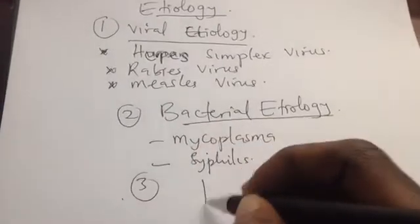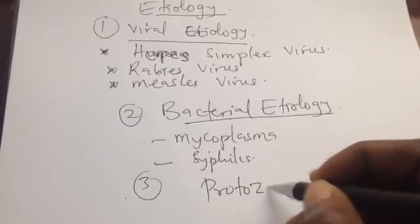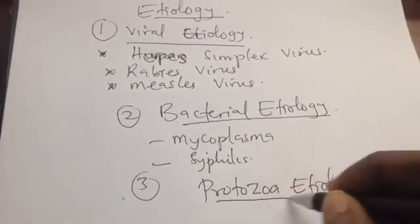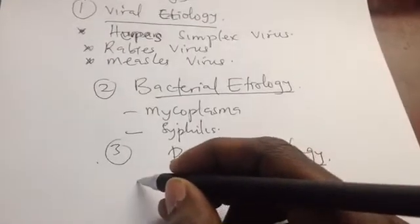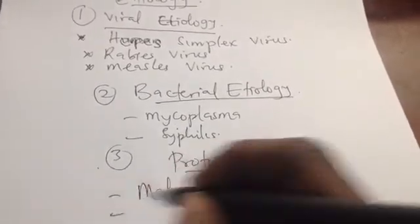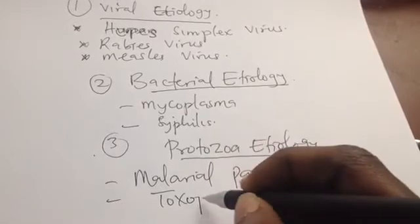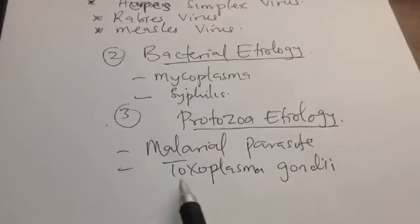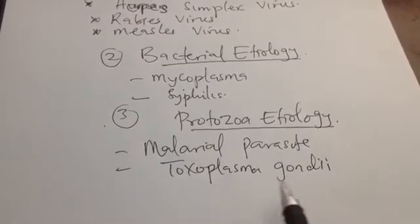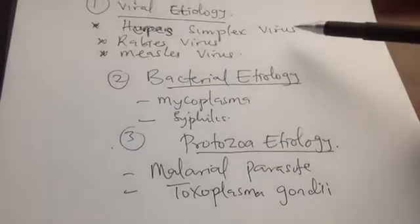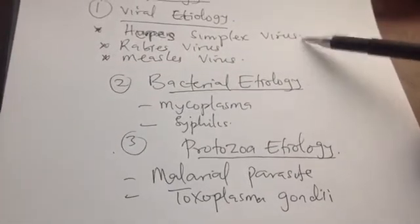Third, we have protozoal infections. The most important ones include the malarial parasite and Toxoplasma gondii — toxoplasmosis. When we view the brain tissue on CT, we see a kind of intracerebral calcification. This is especially seen in newborns. HSV is also a very important cause of encephalitis in newborns.